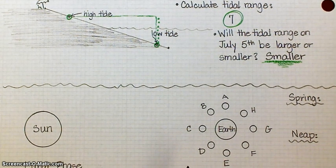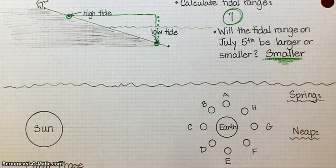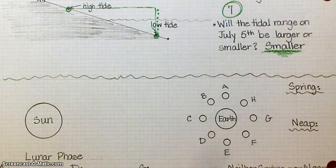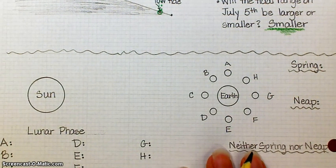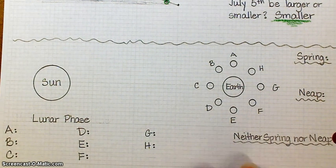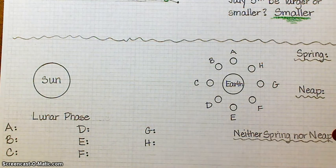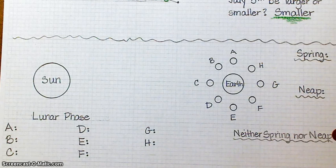All right, so now we've got a diagram. We've got the sun, the earth, and our eight main positions of the moon. And we need to figure out what's what. First of all, what's the first thing I recommend that you do anytime that you're given a diagram like this? What phase do I want you to find and start with?